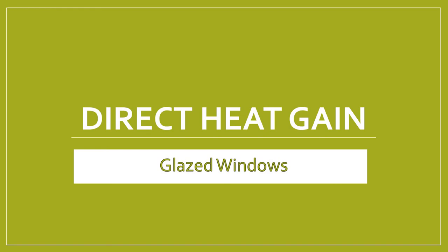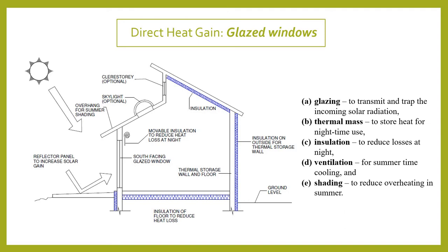Direct heat gain is achieved through glazed windows. The glazing transmits and lets heat come inside. You then put in a large thermal mass — thermal storage in the wall and floor — so that heat is stored within the building. You also provide insulation on your wall, ground, and roof so that there is no heat loss during the night.